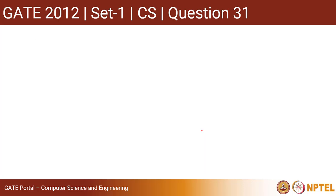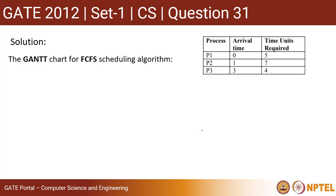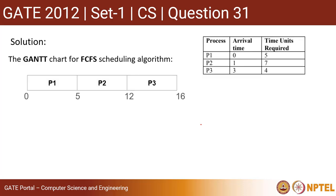Let us first find out what will happen in FCFS — first come first serve. P1 will come first, so it will complete entirely. Then P2 will come next and complete entirely. Then P3 will come next and complete entirely. So the order is P1 completed first, followed by P2, followed by P3. It is quite simple.